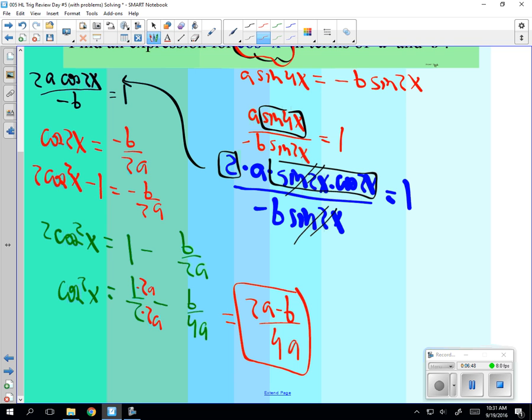Pretty amazing answer, wouldn't you say? And you could do sin squared as well. Now, stop. And I want you to talk to someone you haven't talked to yet and explain from beginning to end how you found what cos squared equals 2a minus b over 4a.